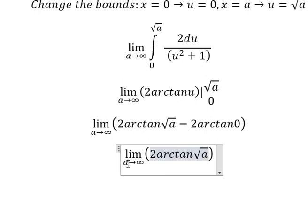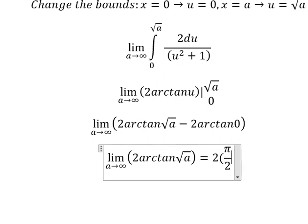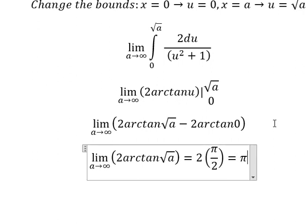We know that when a approaches positive infinity, arctan of the square root of a approaches π/2, so we have π. This is the end, thank you for watching.